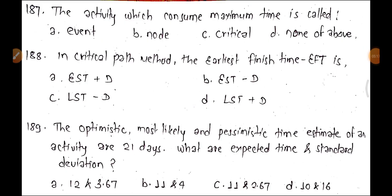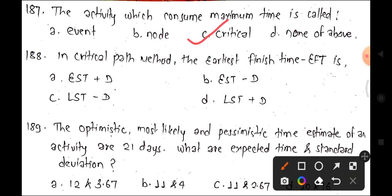Question 187: In the Critical Path Method, the earliest finish time (EFT) equals the earliest start time plus the activity duration. Activities on the critical path have no float. The correct formula is: EFT = Earliest Start Time + Activity Duration. Option A is correct.